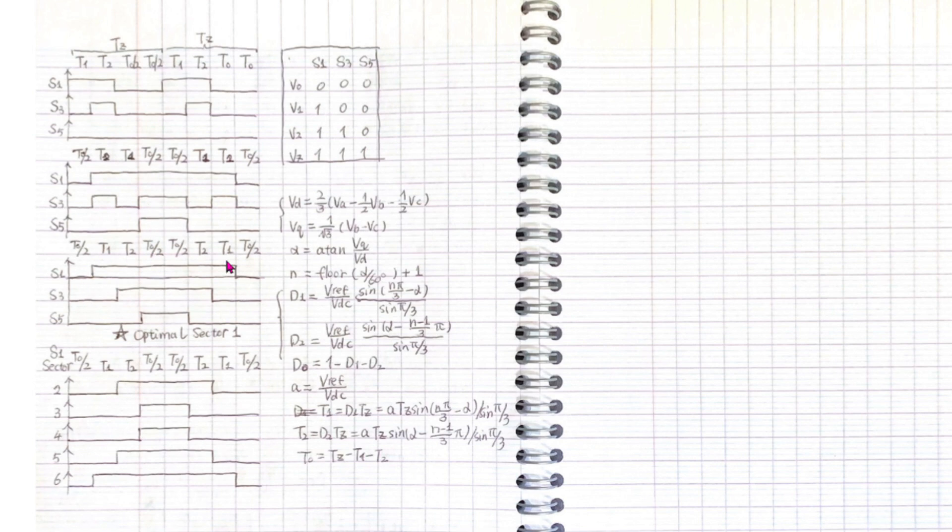We have all S1, S3, S5 only switch once a cycle. I draw the optimal switch pattern for S1 for each sector. For all high switches, you can find a link in the show notes.